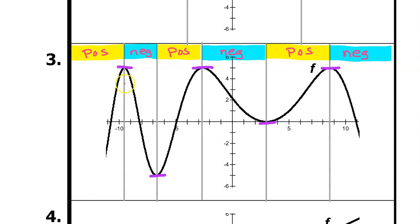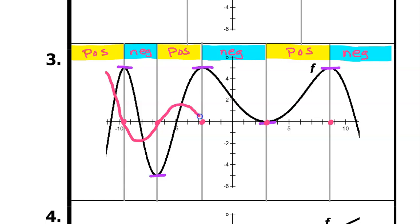At these x values the slope is 0, so f prime should be 0 at each of those points, and when we draw f prime it has to pass through all of them. Because f prime is positive in the first interval, we start our graph above the x-axis and follow the pattern through each zero point — going positive, then negative, then positive, then negative, then positive, then hitting the last point and remaining negative the rest of the way. So this is one possible graph of f prime.